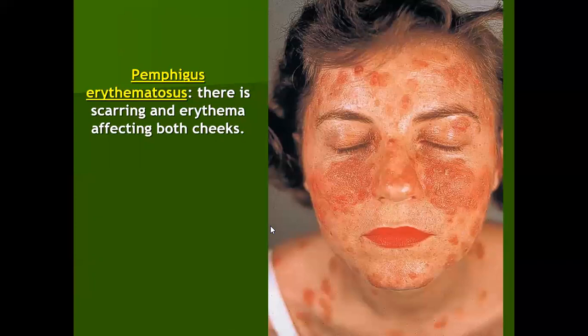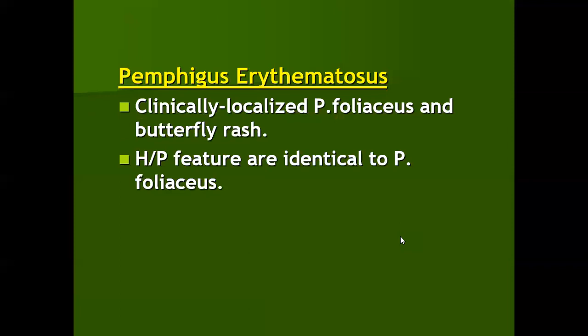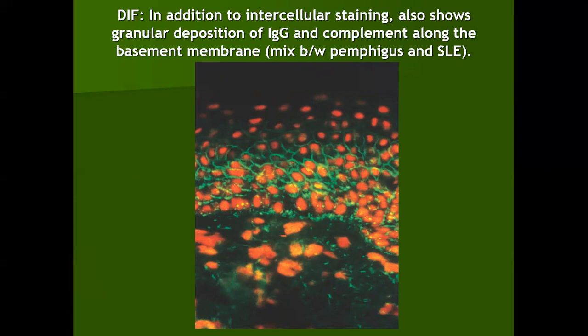Pemphigus erythematosus is a combination of pemphigus foliaceous and systemic lupus erythematosus. You can see a characteristic malar rash along with superficial erosions, occasional blistering, and a seborrheic distribution. Histopathological features are identical to pemphigus foliaceous—a subcorneal blister with neutrophils and acantholytic cells. The direct immunofluorescence is different from pemphigus foliaceous: as in SLE, in addition to IgG, there will be other antibodies deposited between the keratinocytes.